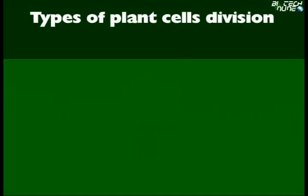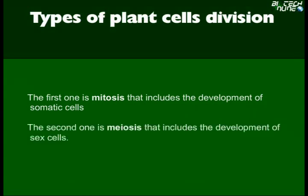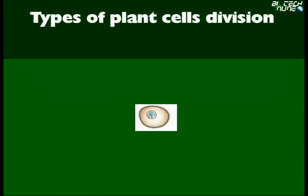There are two types of plant cell division, which include somatic cells and sex cells. The first one is mitosis, which includes the development of somatic cells. The second one is meiosis, which includes the development of sex cells. Here is the representation of the entire process of mitosis.